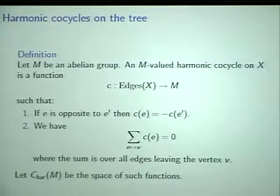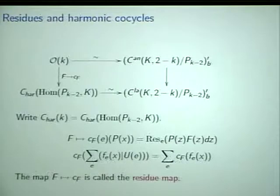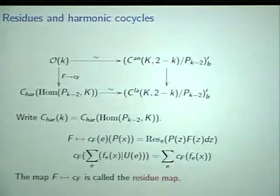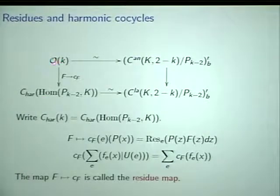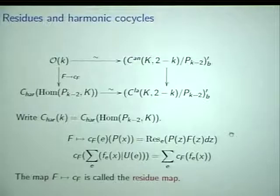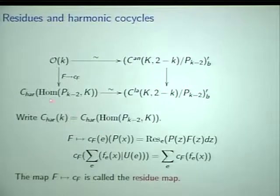This was the definition of what is an M-valued harmonic co-cycle on the tree. It's a function on the edges which changes sign when you reverse the edge, and whose sum over the adjacent vertices counted with orientation is zero. So let me just remind you about what's going on in this picture. O of k is the entire functions on the upper half plane with a group action corresponding to positive even integer k.